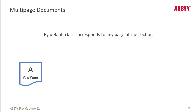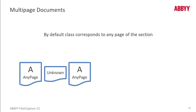The first page is classified as class A, any page position — it is not the end of the document, so we keep classifying. The next page is unknown, so we continue. The third page is classified as A, any page, so it's still the same document. The next page is also classified as A, but it's a first page.